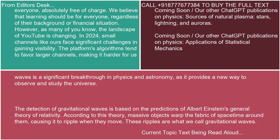According to this theory, massive objects warp the fabric of space-time around them, causing it to ripple when they move. These ripples are what we call gravitational waves.